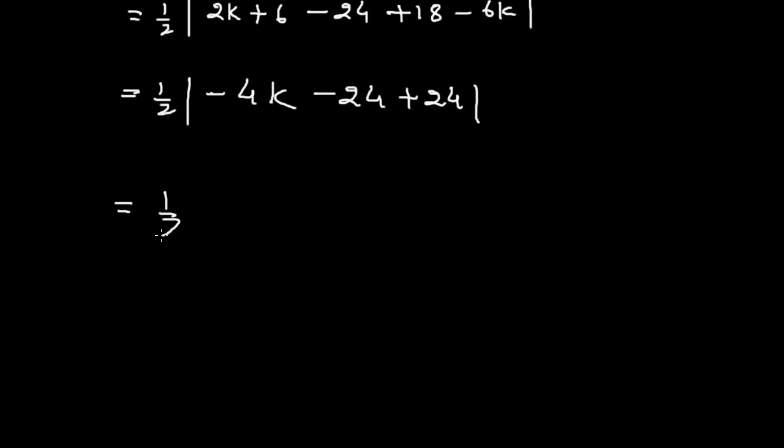1/2 times |-4K|. Since the area of the triangle is positive, this equals 1/2 times 4K.